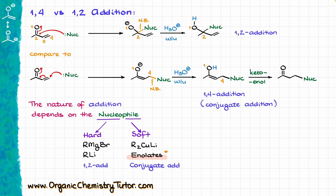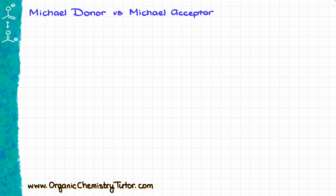The conjugate addition of enolate species to the alpha-beta unsaturated compounds is known as Michael addition. A couple more terms you need to know are Michael donor and Michael acceptor. In the Michael addition reaction, the Michael donor is our nucleophile, while the Michael acceptor is our electrophile — our alpha-beta unsaturated compound. Generally speaking, nearly any alpha-beta unsaturated compound will do as the acceptor.